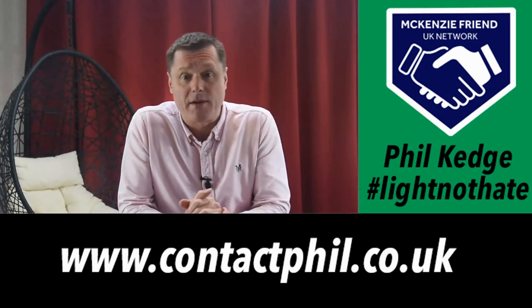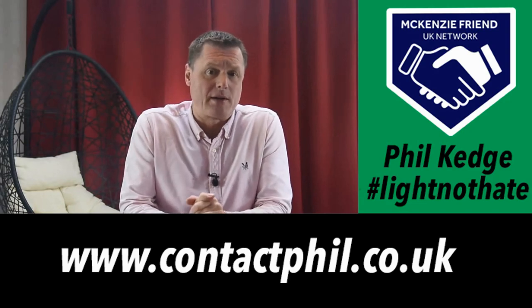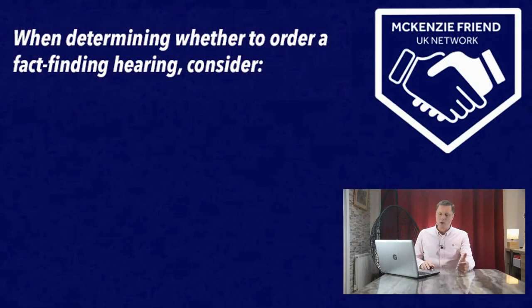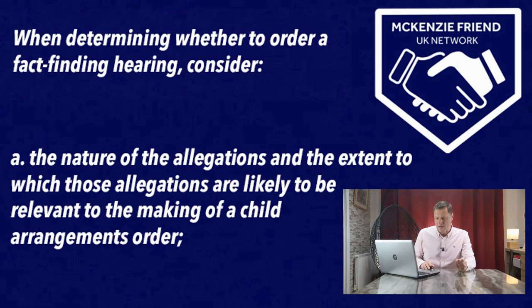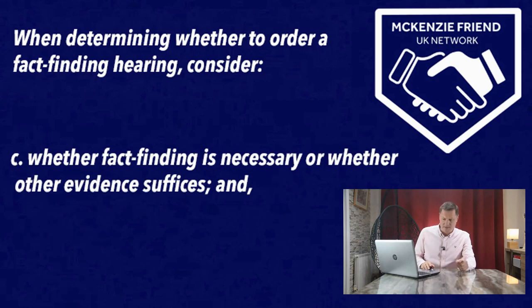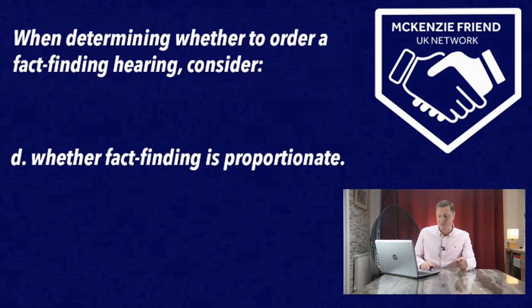In determining whether a fact-finding is necessary, the court must consider the following: (a) the nature of the allegations and the extent to which those allegations are likely to be relevant to the making of a child arrangements order; (b) that the purpose of a fact-finding is to allow assessment of the future risk to the child and the impact of any abuse on the child; (c) whether fact-finding is necessary or whether other evidence suffices; and (d) whether fact-finding is proportionate.